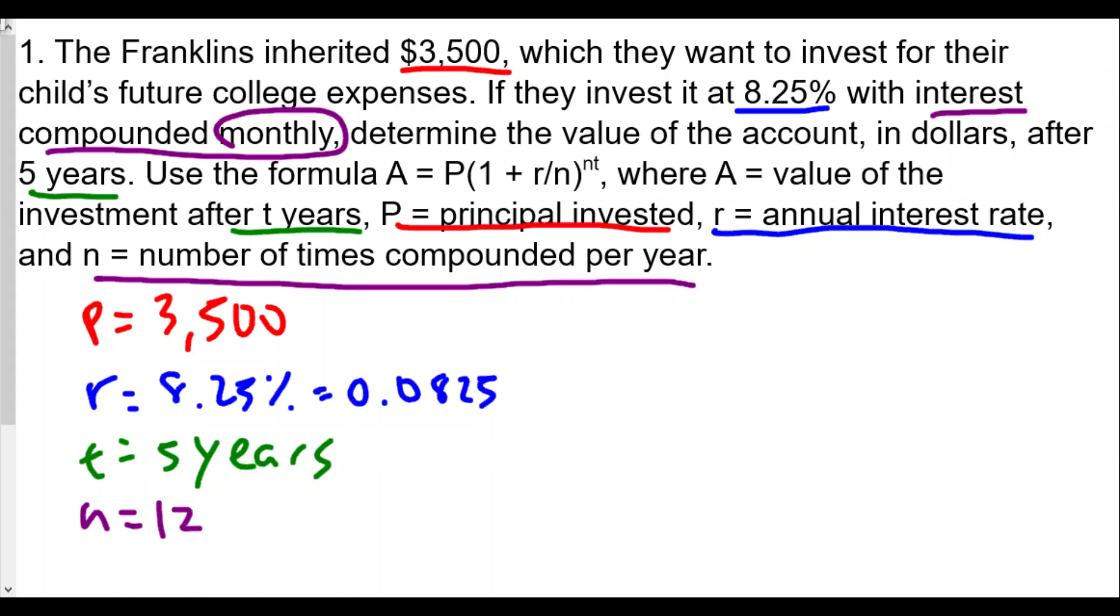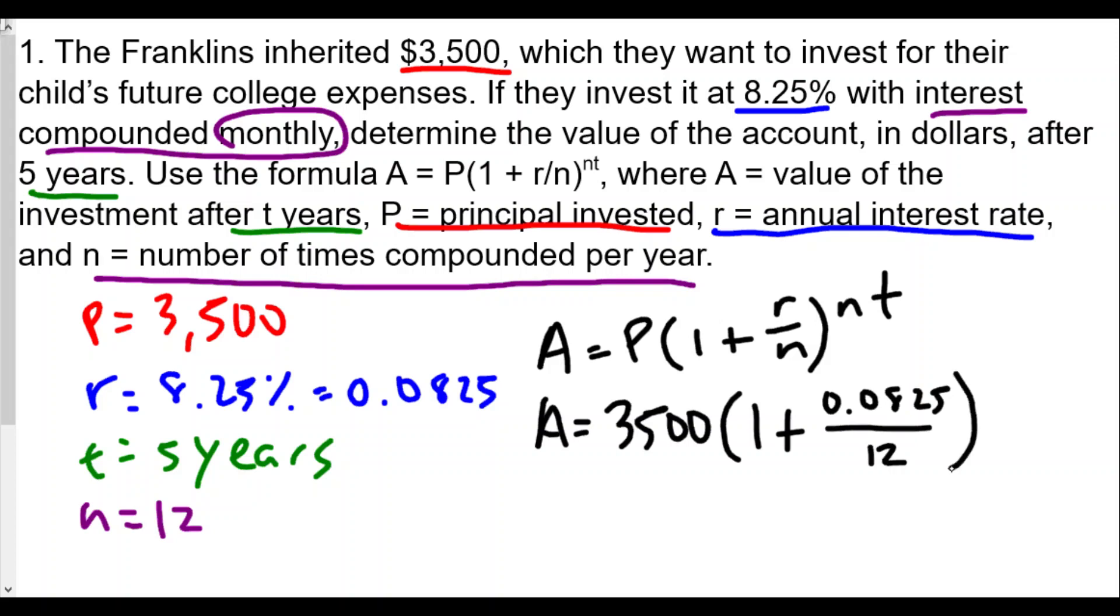Now we're going to fill in the formula. A equals 3500 times one plus 0.0825 over 12 raised to the 12 times 5 power. We're just pulling in the values for each item.